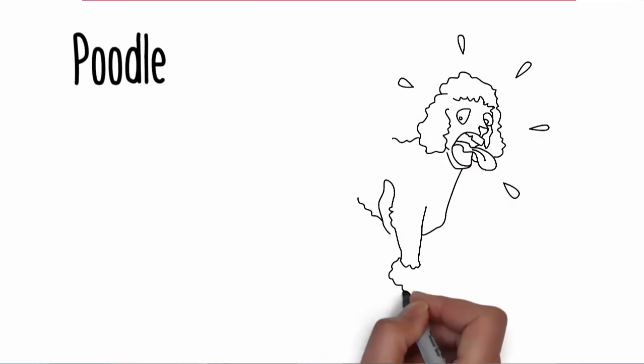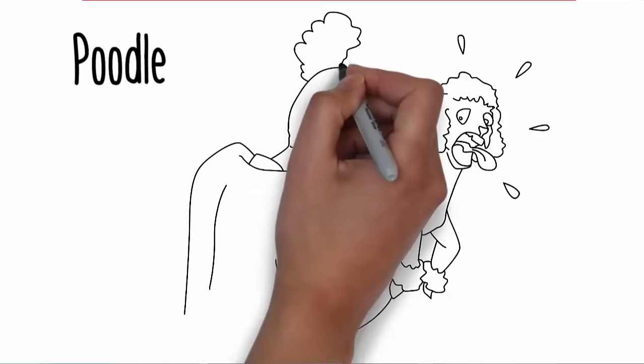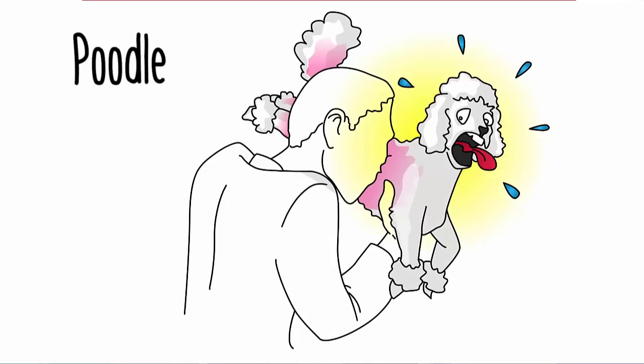Poodle. Obama picks up a passing poodle and uses it to wipe juice off his face. The poodle is pure white, but as it soaks up watermelon juice, it slowly turns bright pink.